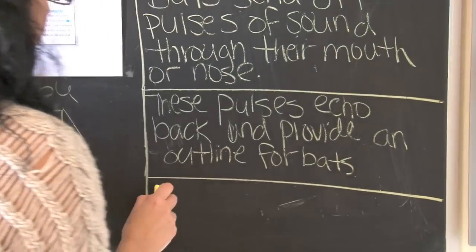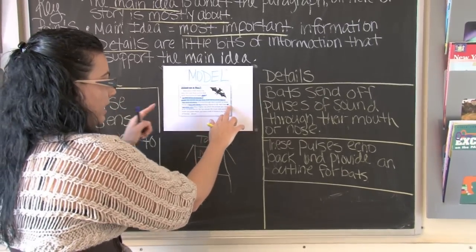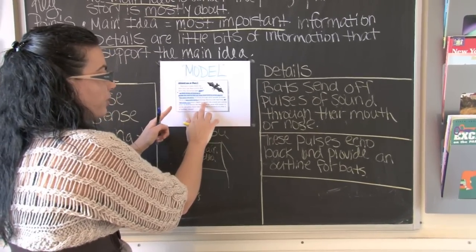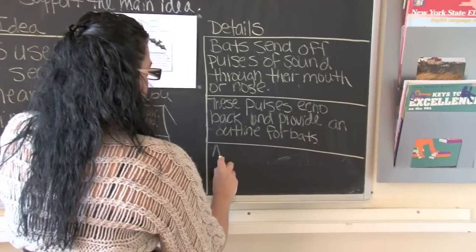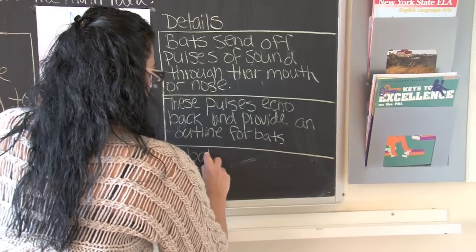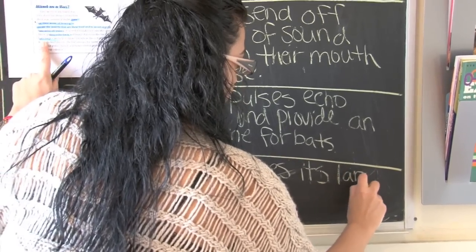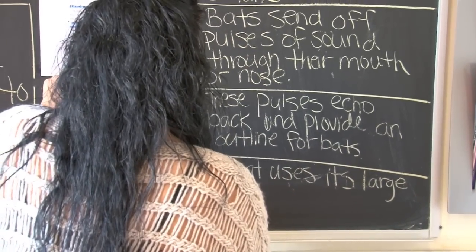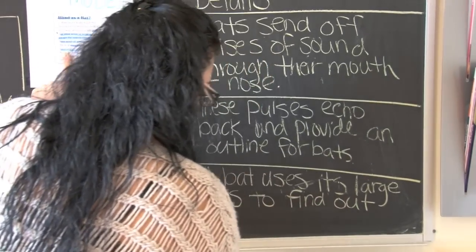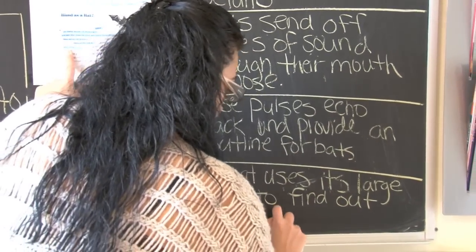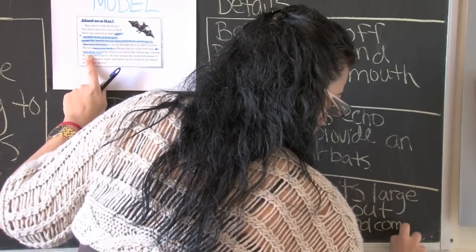Now we're going to take a look at detail number three. Remember, the bat has large ears and it was saying that it doesn't always use their sight. A bat's large ears help to figure out where the echoes are coming from. So that's detail number three. We're going to put it down here. A bat uses its large ears to find out where the sound is coming from.